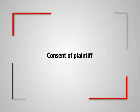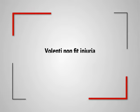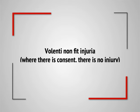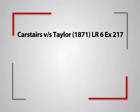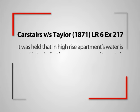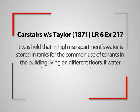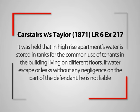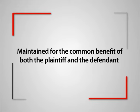There is another exception: consent of the plaintiff. The principle of volenti non fit injuria — where there is consent, there is no injury — is well-known. Where the plaintiff has consented to the accumulation of dangerous things on the defendant's land, he cannot sue if it escapes and causes damage. In Kearstair v. Taylor, it was held that in high-rise apartments, water is stored in tanks for the common use of tenants living on different floors. If water escapes or leaks without any negligence on the part of the defendant, he is not liable. The rule of strict liability does not apply if the source of danger — for example water tanks, gas pipes, or electric wiring — is maintained for the common benefit of both the plaintiff and the defendant.